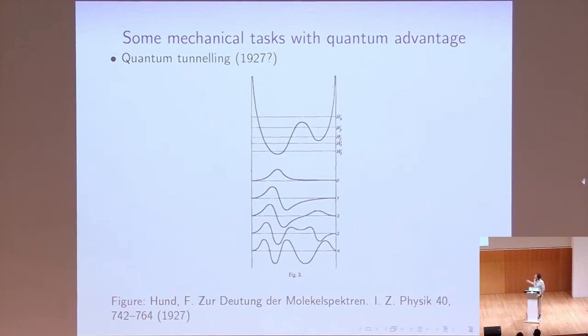So, one could arguably say that the first mechanical task where there's a quantum advantage is quantum tunneling. It's very difficult to put a date to the discovery of quantum tunneling, because it seems that in that time, everyone was vaguely aware of it. But it was published for the first time in the first of a trilogy of papers where Hund realized that